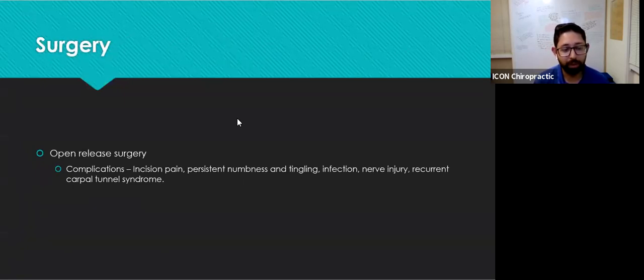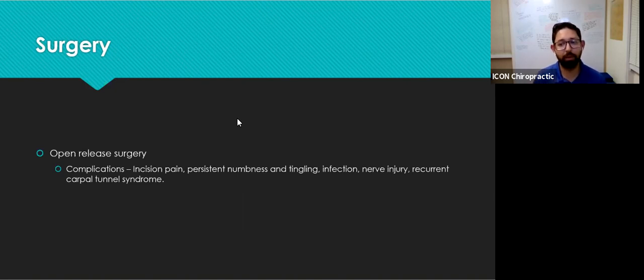Let's talk about open release surgery. Carpal tunnel release is one of the most common surgical procedures in the United States. Many people have carpal tunnel, so they go to their doctor. I mentioned a statistic earlier about how about 50% of people diagnosed with carpal tunnel syndrome end up getting surgery when only 5% actually needed the surgery. The success rate is around 75 to 90%, but there can be complications. You can have incision pain, persistent numbness and tingling—it's not 100% effective—infection, nerve injury, and there can be reoccurring carpal tunnel syndrome.